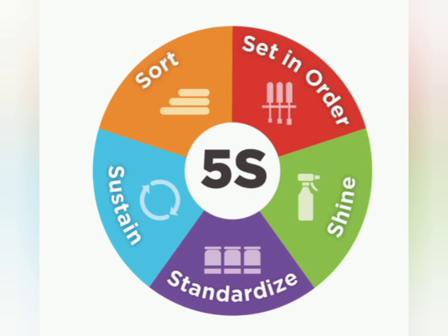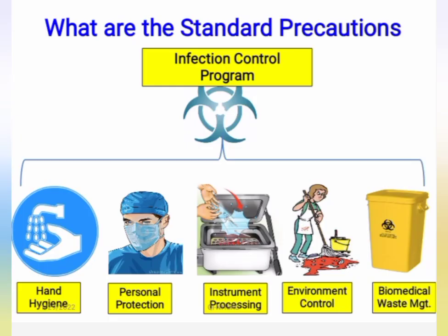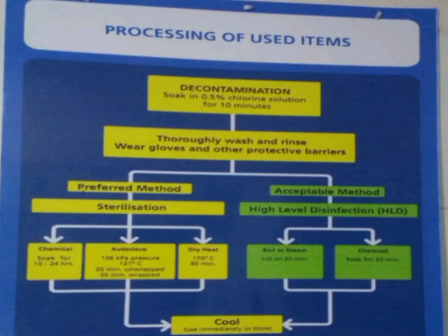The next banner is the Standard Precaution banner, which displays all infection control protocols together. First is hand hygiene, secondly personal protection, thirdly instrument processing including all sterilization techniques, then environmental control, and lastly biomedical waste management. The equipment sterilization process can also be shown with the help of this banner in your HWC.